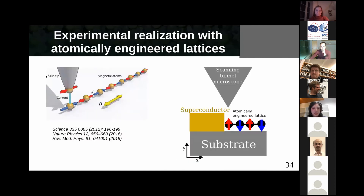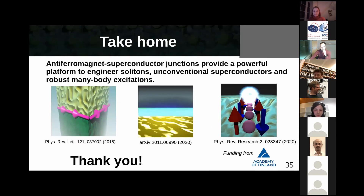The right system to realize one-dimensional quantum antiferromagnetism near a superconductor could be one-dimensional spin chains in close proximity to a superconductor, allowing exploration of these quantum many-body excitations. To summarize: antiferromagnetic-superconductor junctions are a very interesting platform for realizing solitons, topological superconductivity with Majorana bound states, and more generically robust many-body excitations. Thank you very much for your attention and I look forward to your questions.